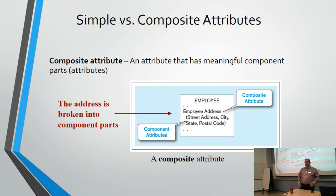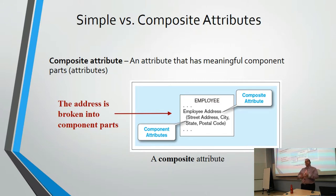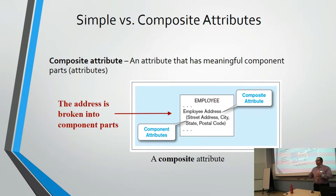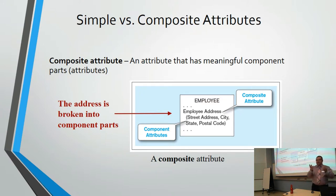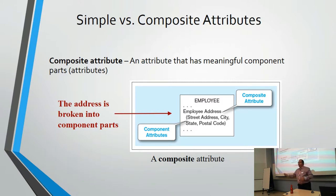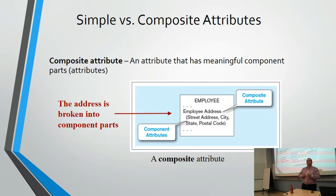At the initial design level, address is known as a composite attribute — it's made up of many little pieces, like a Lego block. When it comes time to put it in a database, you need to break that composite attribute apart. It's like stepping on Lego — if it's going to hurt, at least break it apart so it hurts less.